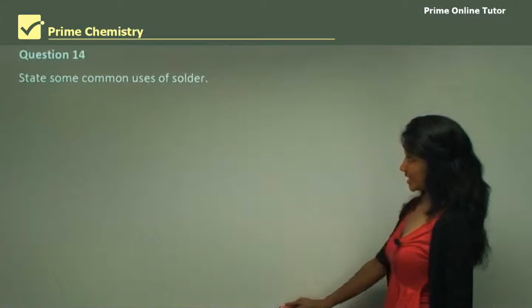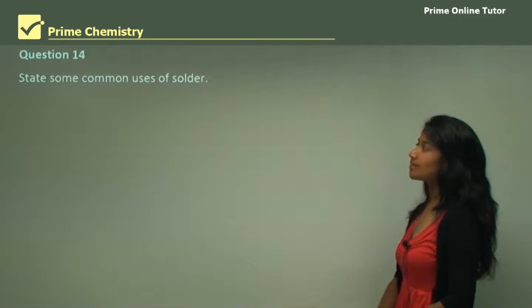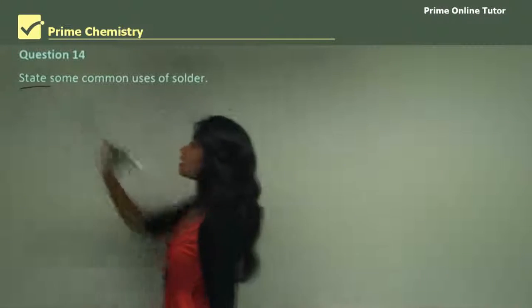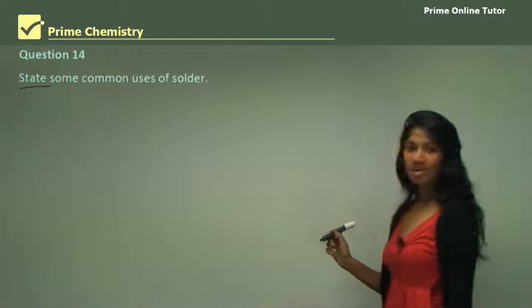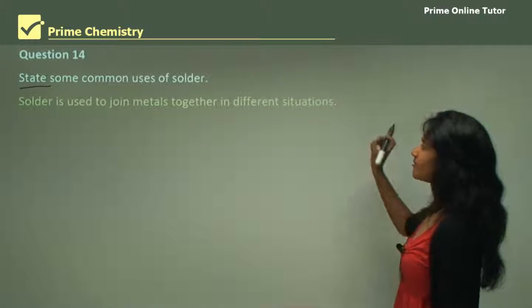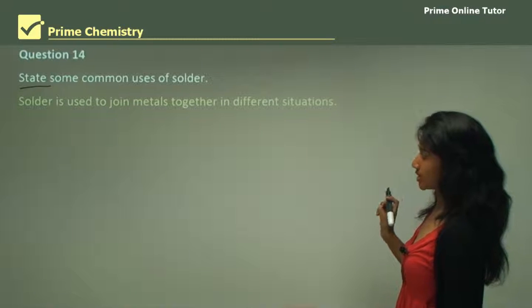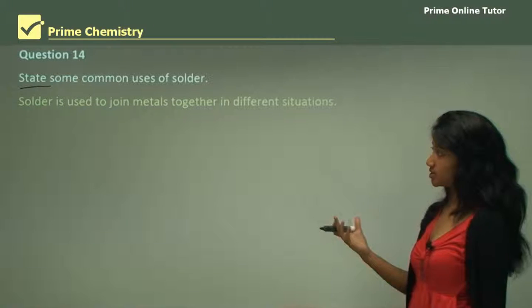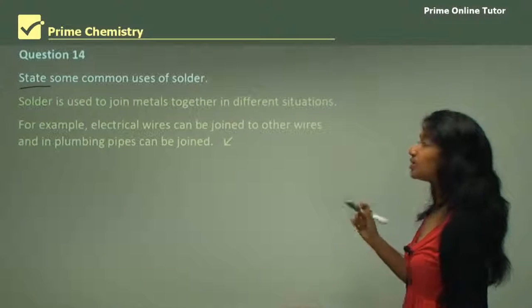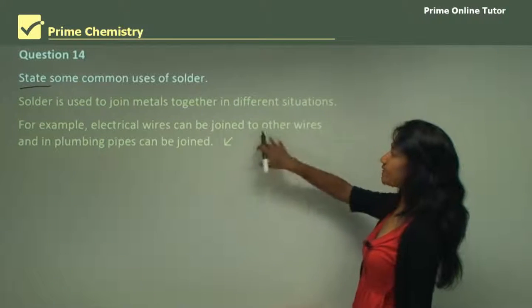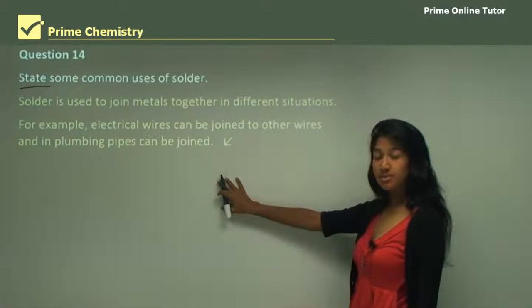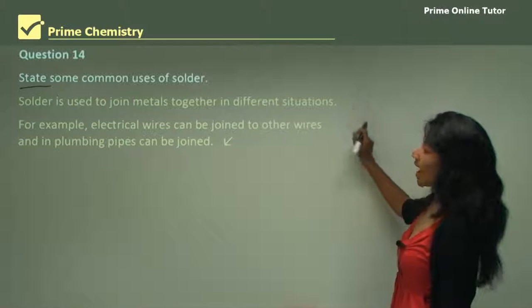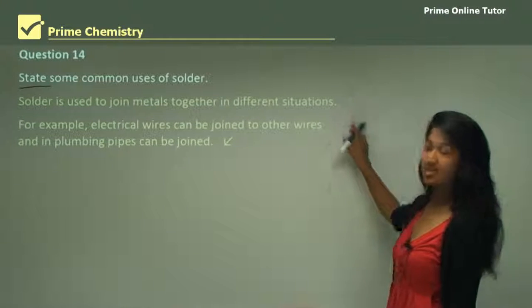Question 14 says: state some common uses of solder. The verb is 'state,' so you would only need to name it and provide a very brief description. Solder is used to join metals together in different situations — for example, electrical wires can be joined to other wires, and in plumbing, pipes can be joined as well.